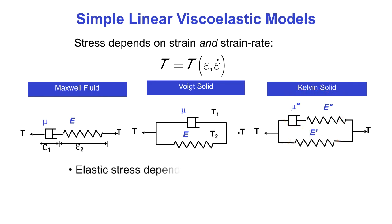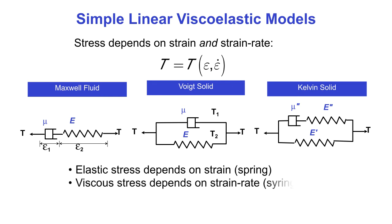In these models, the spring represents the elastic stress, which depends on the strain, and the dashpot represents the viscous stress, which depends on the strain rate.